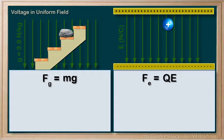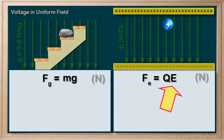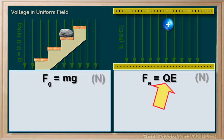Let's stop and compare for a moment. Both of these equations for force give us a force in newtons. Both have a field strength — g for the gravitational field strength, and e for the electric field strength. And then in both, we have an extra characteristic specific to the rock or the charged particle: mass for the rock in kilograms, or charge for the particle in coulombs.